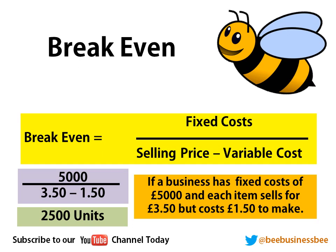So we've got a fixed cost of £5,000. We know the selling price of each item is £3.50. We know it costs us £1.50 in variable cost because that's what it costs to make it. So let's do the bit at the bottom first — that's our bit in brackets. So we've got £2 at the bottom. So £5,000 divided by our £2 gives us 2,500 units. And that's how many units you need to sell to break even. If you wanted to turn that into how much we need in cash, you'd have to multiply the 2,500 units to break even by the £3.50, and that would give you the cash value needed to break even.